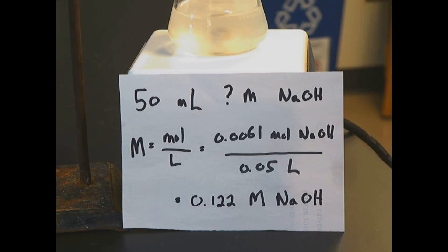It took 6.1 milliliters of 1 molar hydrochloric acid to neutralize the sodium hydroxide back to clear. Well, that's 0.0061 liters, meaning 0.0061 moles, if it was 1 molar. And if it neutralized our 50 milliliters of sodium hydroxide, that gives us a final concentration of 0.122 molar sodium hydroxide, and that's a titration.